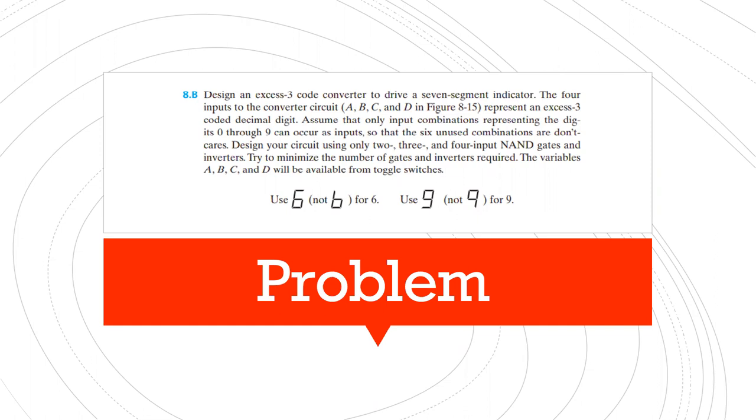Design your circuit using only two, three, and four input NAND gates and inverters. Try to minimize the number of gates and inverters required. The variables A, B, C, and D will be available from toggle switches, and max gates that we need is 16.